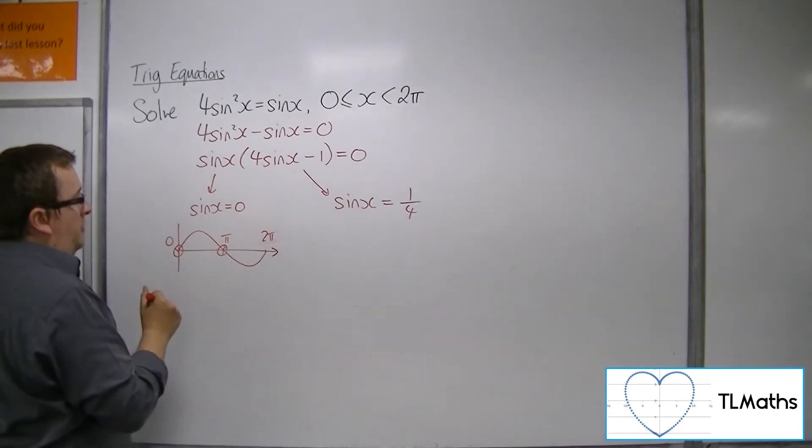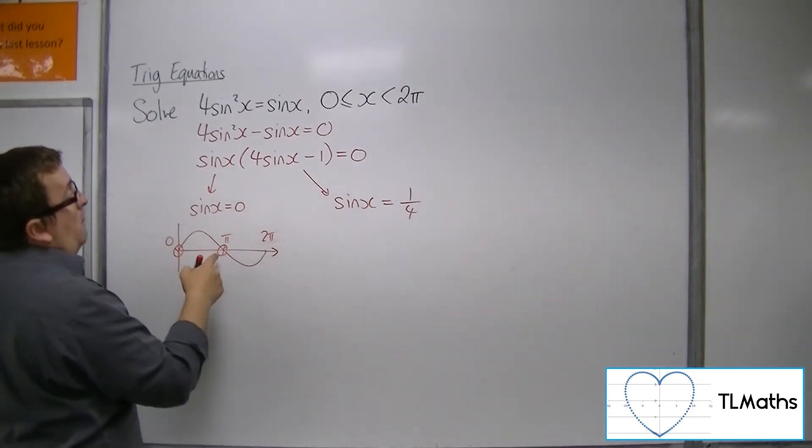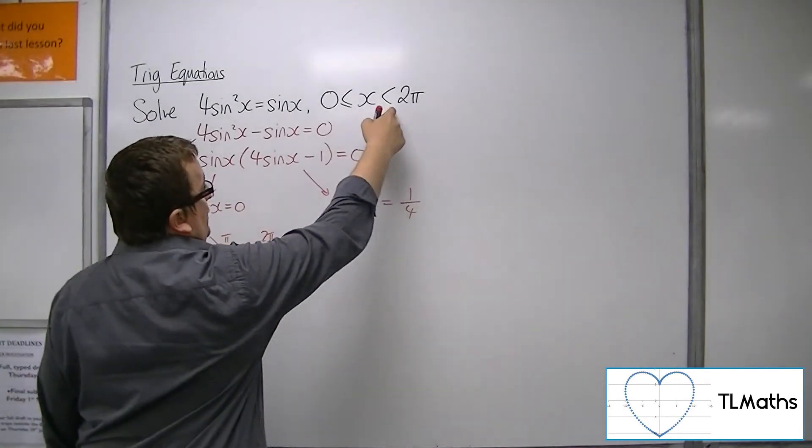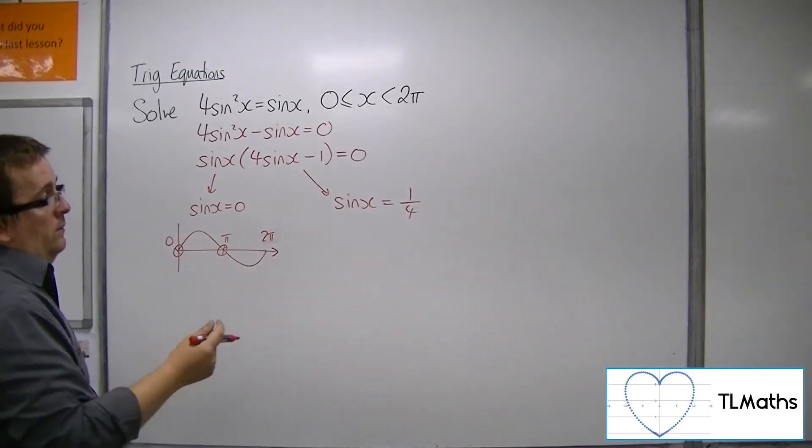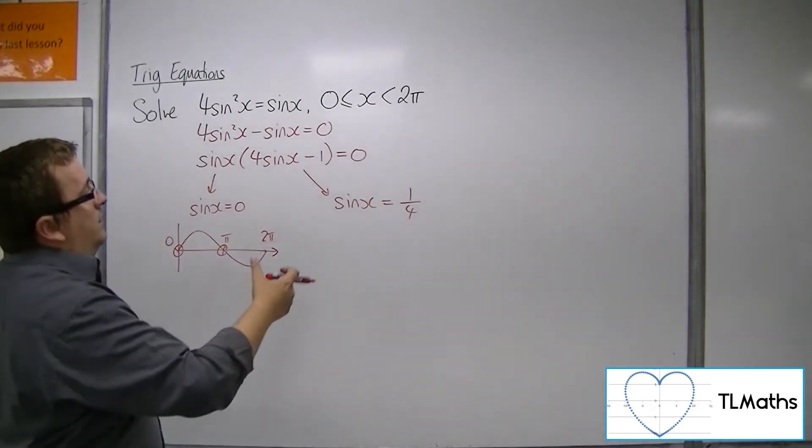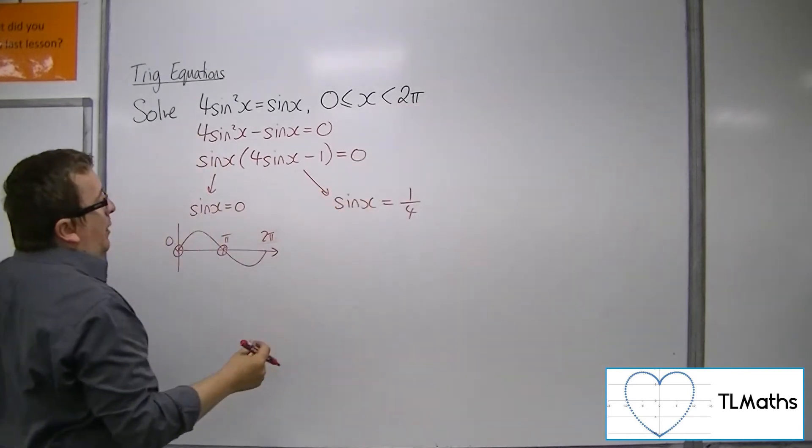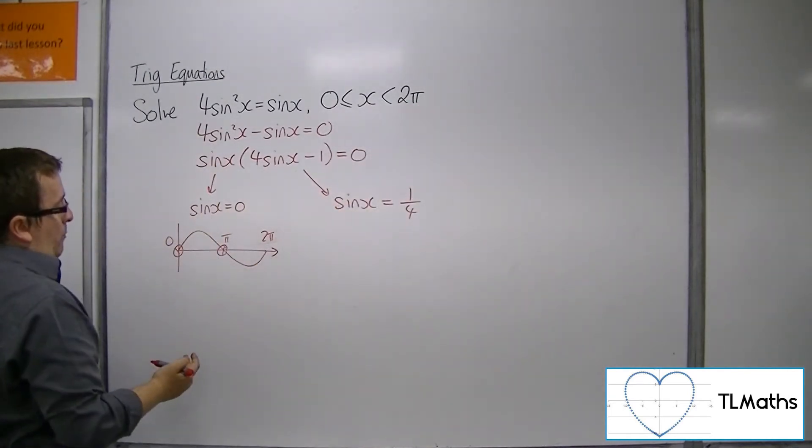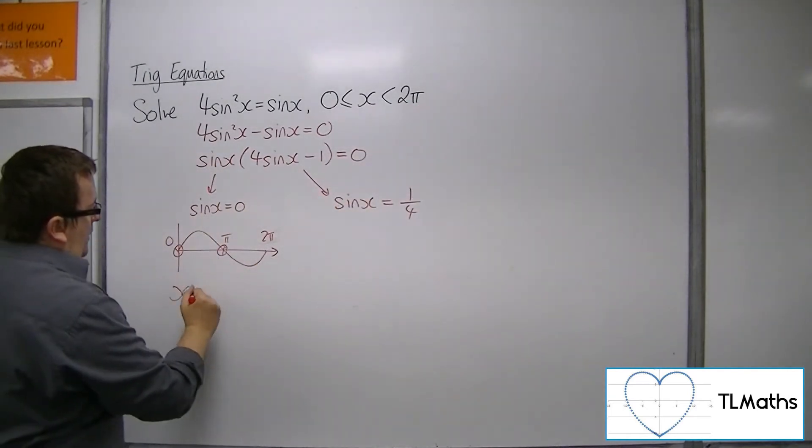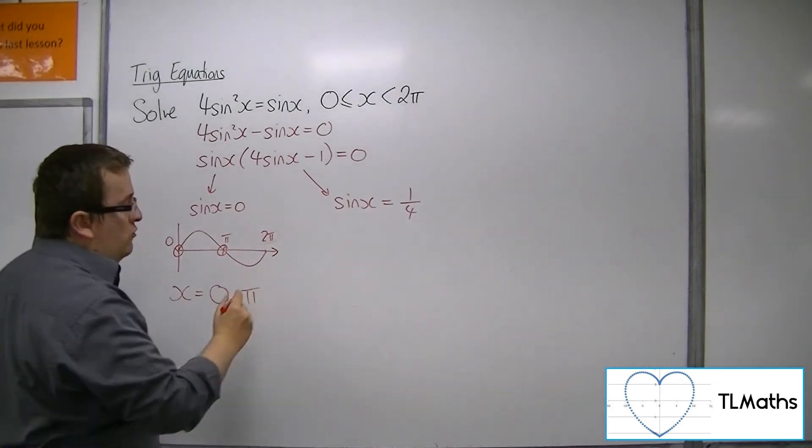So the two solutions between 0 and 2 pi are 0 and pi. 2 pi is not included because the question does not include 2 pi there. So we must be less than 2 pi. So x is either 0 or pi radians.